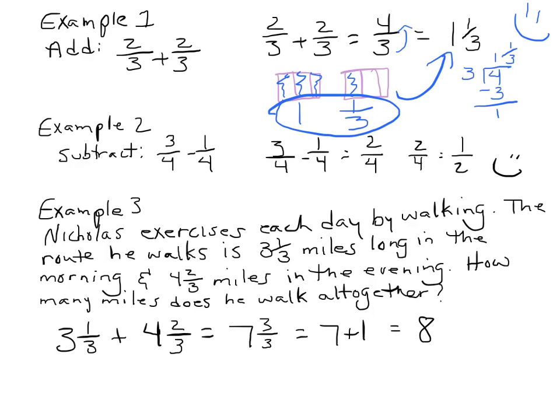Now in example 2, you see subtract 3 fourths minus 1 fourth. We're going to get 2 fourths. You can look at this, and because you guys are so smart and because you have so much knowledge, you go, looky here, my numerator is exactly half of my denominator. That means it's one half.